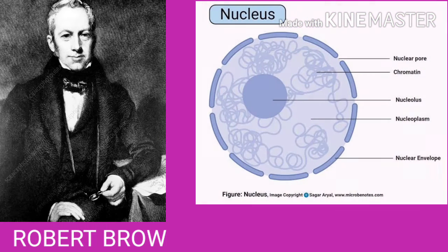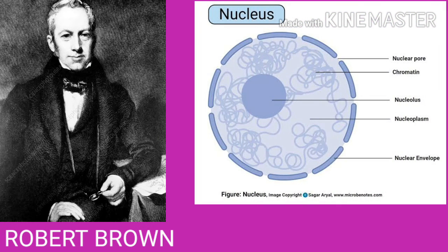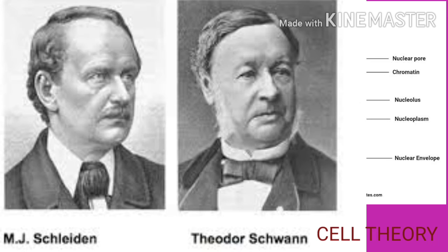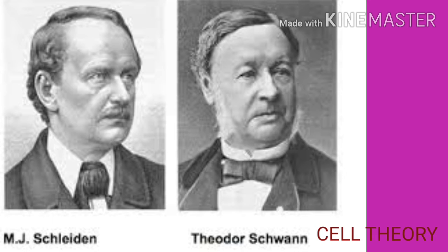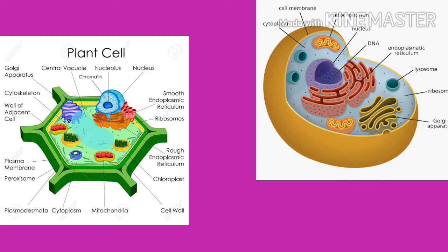Robert Brown discovered the nucleus in 1831. German scientist M.J. Schleiden and Theodor Schwann studied cells of plants and animals and identified the key differences between the two cell types.